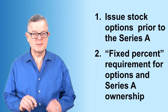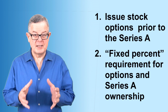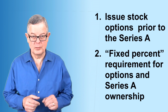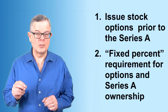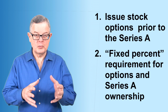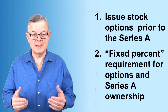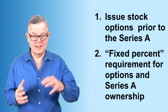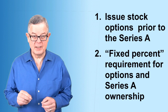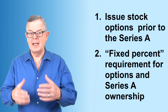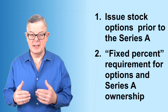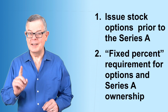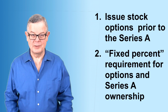Option number two is the fixed percent approach. Here the investor decides they don't want to be diluted by all of those convertible securities. So they require that the option pool and the Series A ownership, after everything converts, is some fixed percentage. As a result, the Series A is not getting diluted by the convertible security — instead, it's the founders that are getting diluted.